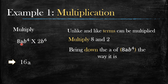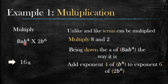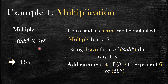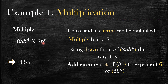Move on to 'b'. Look on the other side of the multiplication sign — is there another b? Yes, there is. The exponent of the first b is 4, and the exponent of the b on the other side is 6. Because they are like bases, we add the exponents: 4 plus 6.